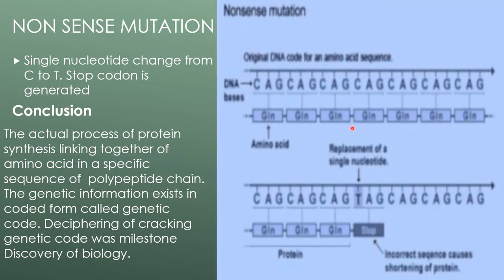Nonsense mutation: the replacement of a single nucleotide leads to an incorrect sequence, causing shortening of the protein because it introduces a stop codon. These are the types of mutations shown in the clinical significance of genetic code.